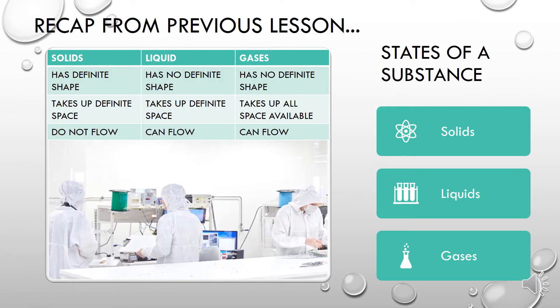Let's recap on our previous lesson. We learned about the states of substances: the solid, the liquid, and the gas. The three most important characteristics or properties that differ among them is that solids have a definite shape. For example, if you take a chair, it has a definite shape — it's very hard to just change its shape. You have to take a hammer and beat it into something else.